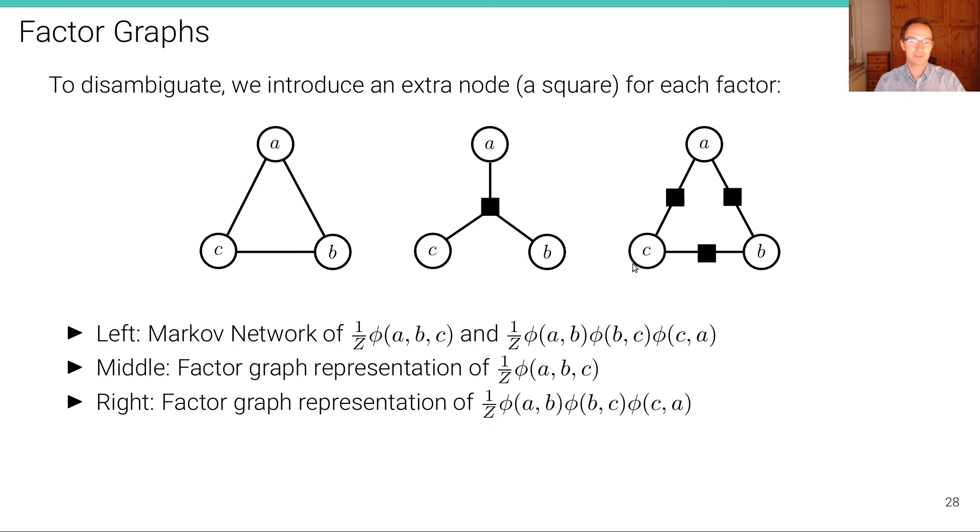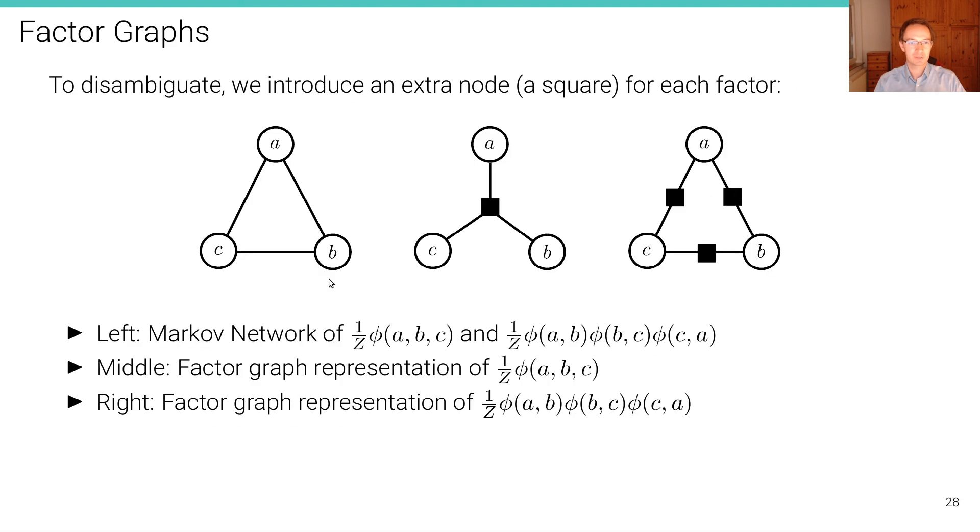And each of these squares is called a factor. And now we can distinguish these two situations from before. So here we have the Markov network that is the same for both factorizations. But now with this explicit notation of factors, we can write in the middle the factor representation of this factorization with just one clique. And here we can have the factorization into this representation with three cliques, but just two variables in each clique.